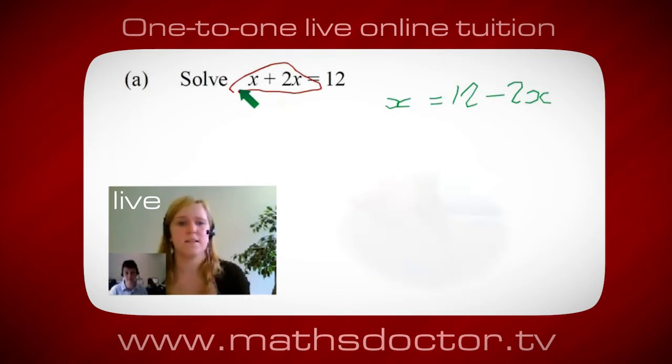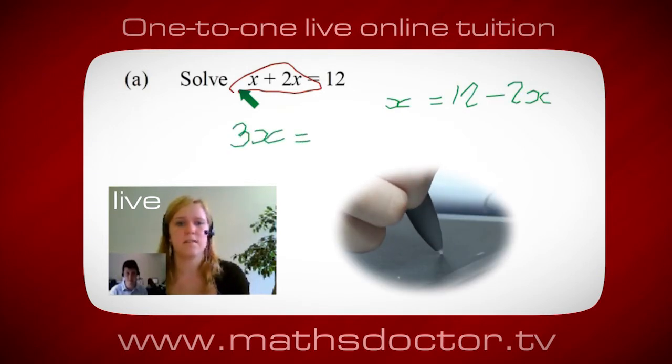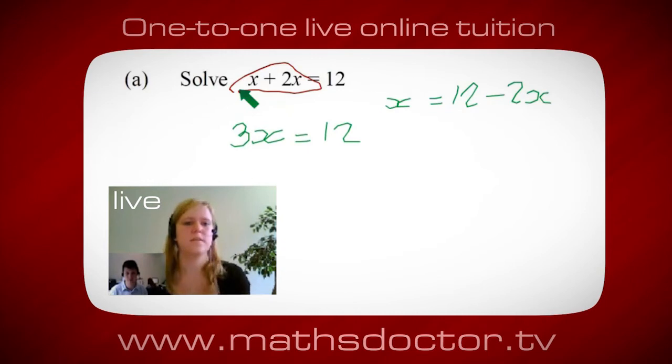Oh, OK, it's 3x, isn't it? Yeah, absolutely. So 3x equals 12. Oh, and so x equals 4. Brilliant, spot on, well done.